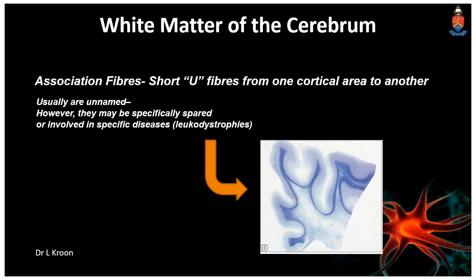Another example of association fibers are those called the short fibers or U-fibers, that connect one cortical area to another. Usually these fibers are unnamed, but they may be specifically spared in specific diseases like the leukodystrophies, and therefore may be of clinical interest. They're also commonly involved in demyelinating conditions because they have a high energy output, and are therefore typically affected early on in disorders like multiple sclerosis that causes demyelination.